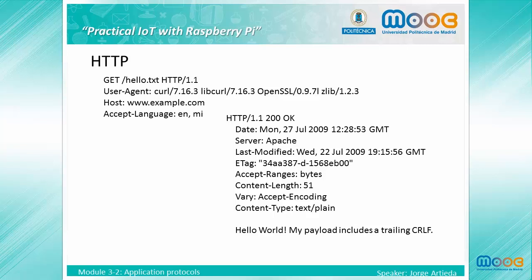The following example is extracted from the HTTP standardization document. The first part of the request is the method. The following methods can be used: GET, POST, HEAD, OPTIONS, PUT, DELETE, TRACE, and CONNECT.